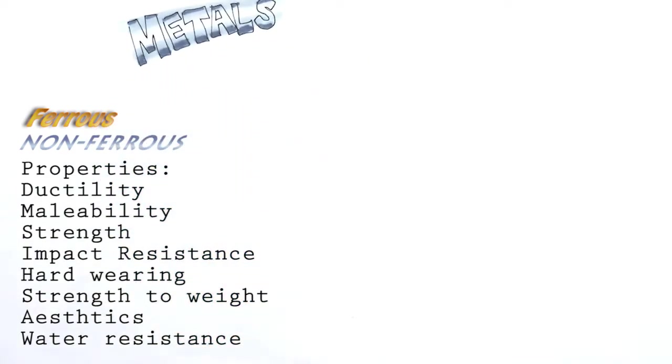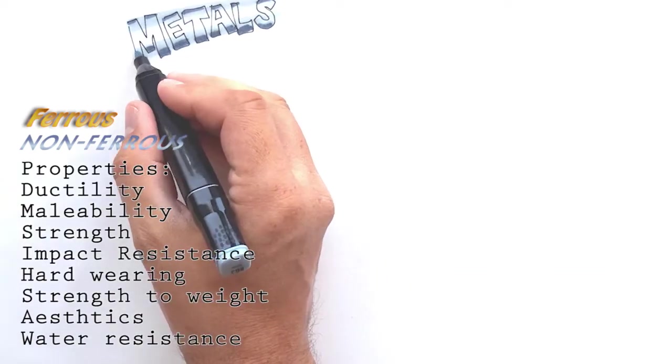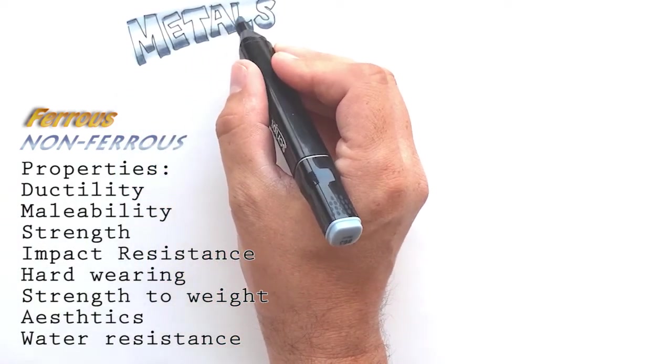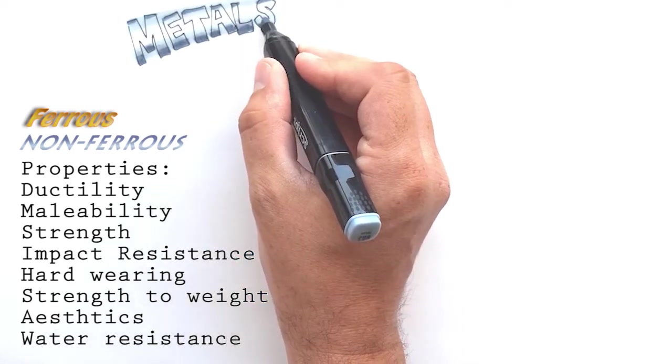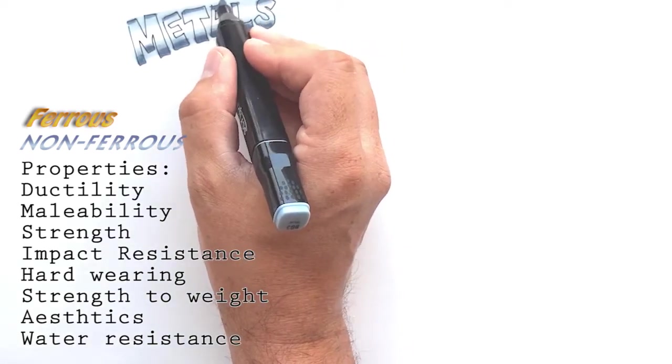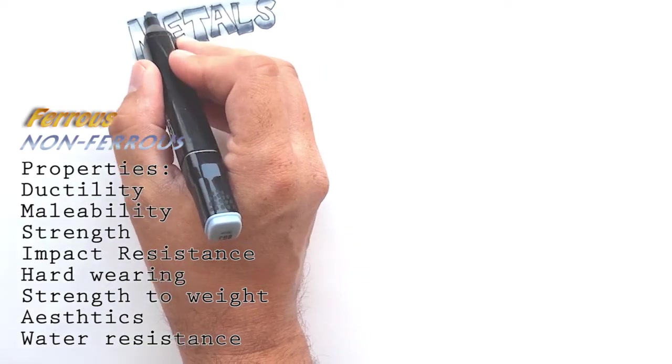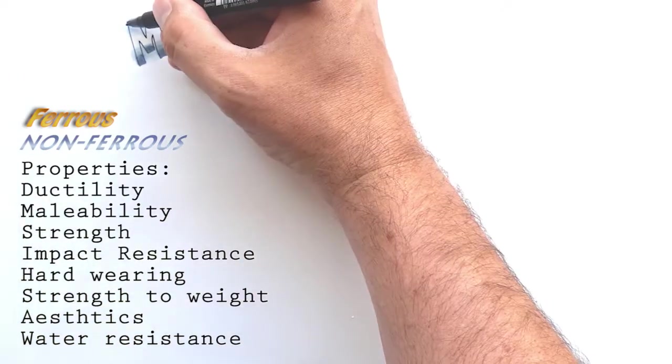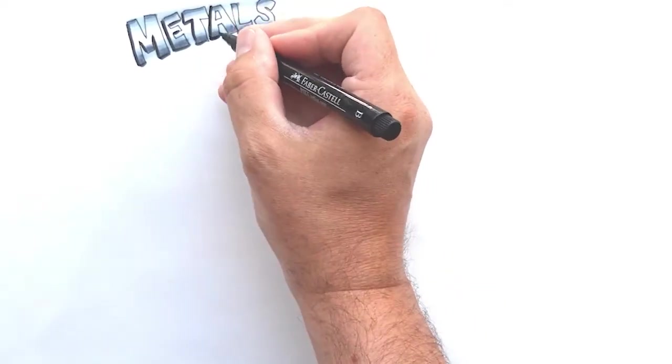So it's important that you have a handle on what the terms mean and indeed which metals have different properties and what these properties are. So what we're going to do is take each of these properties one at a time as well as looking at the different metals that you need to know for design and manufacture.